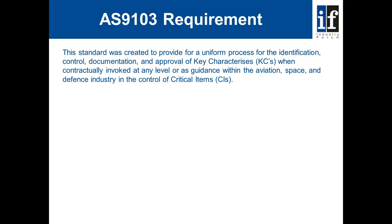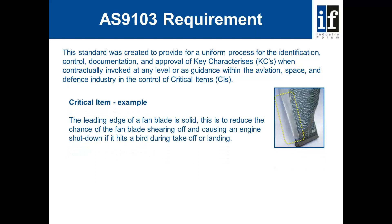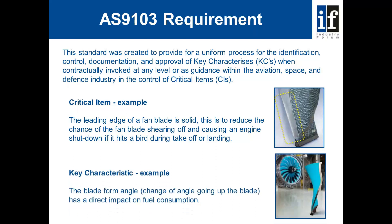Let's have a look at a critical item example. The leading edge of a fan blade is solid. This is to reduce the chance of the fan blade shearing off and causing an engine shutdown if a bird hits during takeoff or landing. A key characteristic, for example, is the blade form angle — the change of the angle going up the blade has a direct impact on fuel consumption. Critical items tend to be related to parts and functions, while key characteristics tend to relate to features and performance.